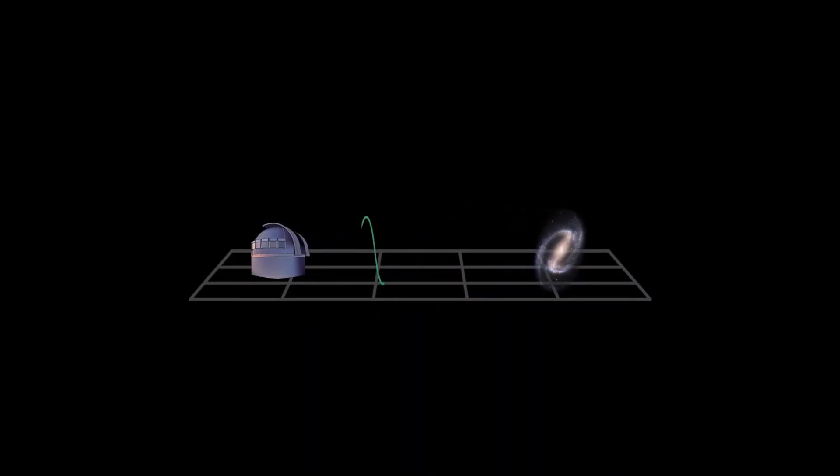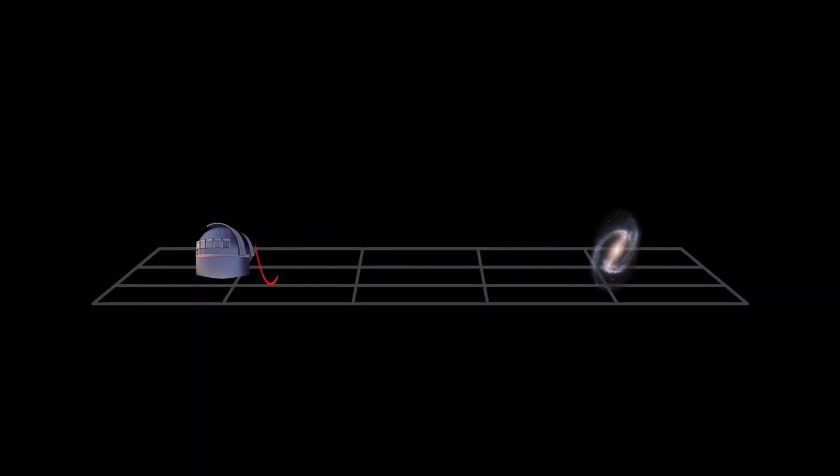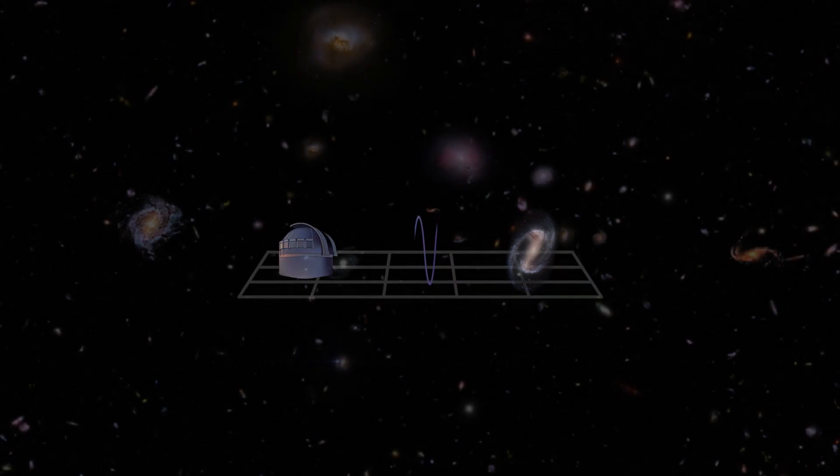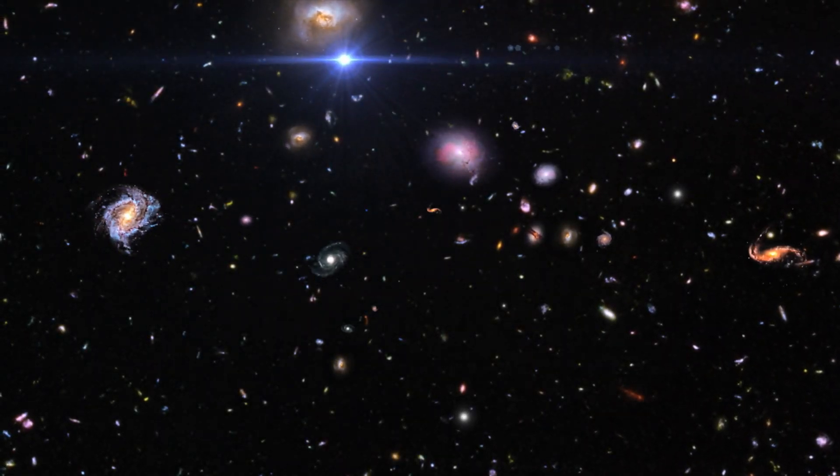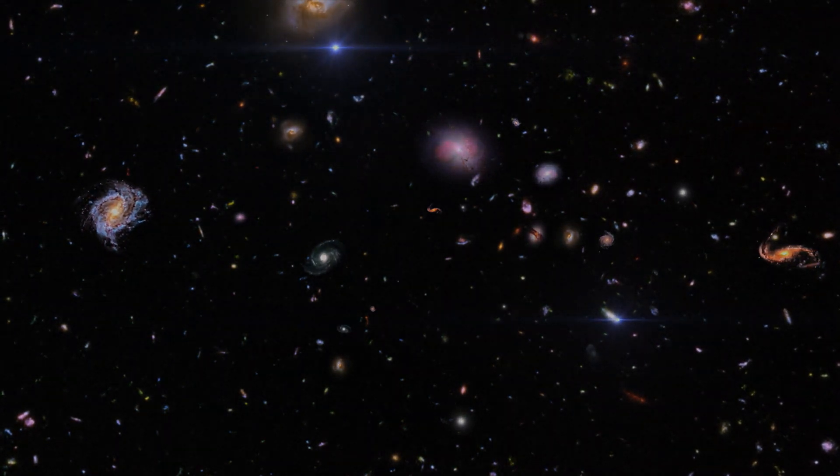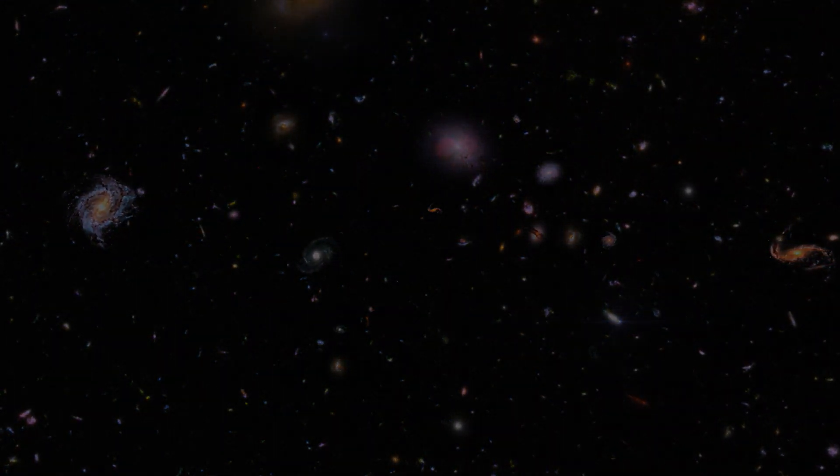This also means that the light which is now reaching us from 13 billion years ago represents stars and galaxies which are actually much further away, around 46 billion light years in fact. Making our visible universe, our observable bubble, around 93 billion light years in diameter.